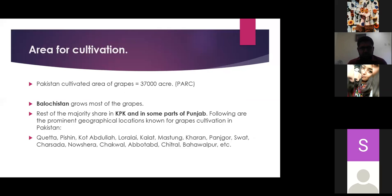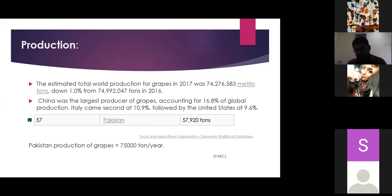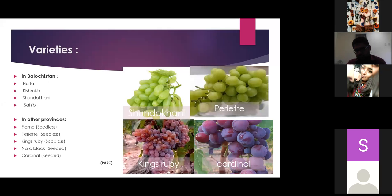The rest of the grapes are grown in some parts of Punjab. The main geographical regions where grapes are grown in Pakistan are Pishin, Quetta, Kob Dulla, Loralai, Kalat, Mustang, Kharan, Panjgur, Turbat, Charsadda, Nowshera, Chakwal, Abbottabad, Chitral, and Bahawalpur.